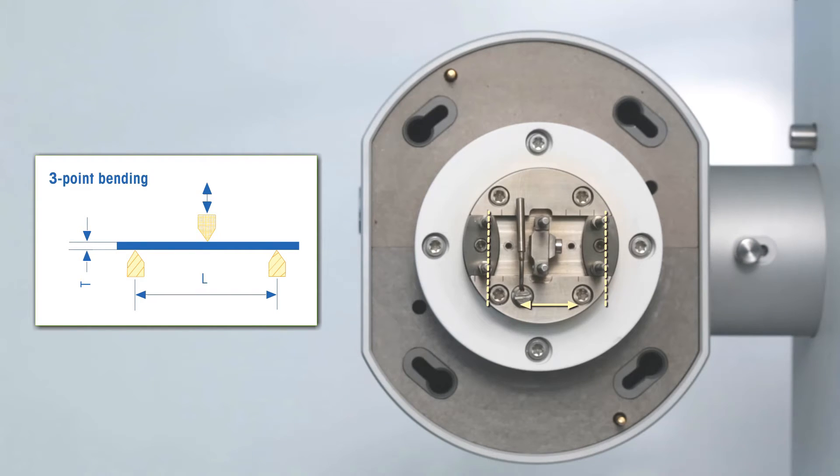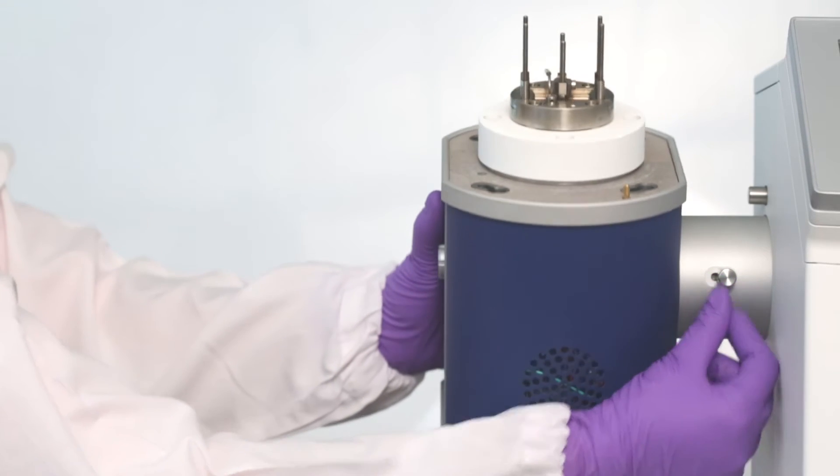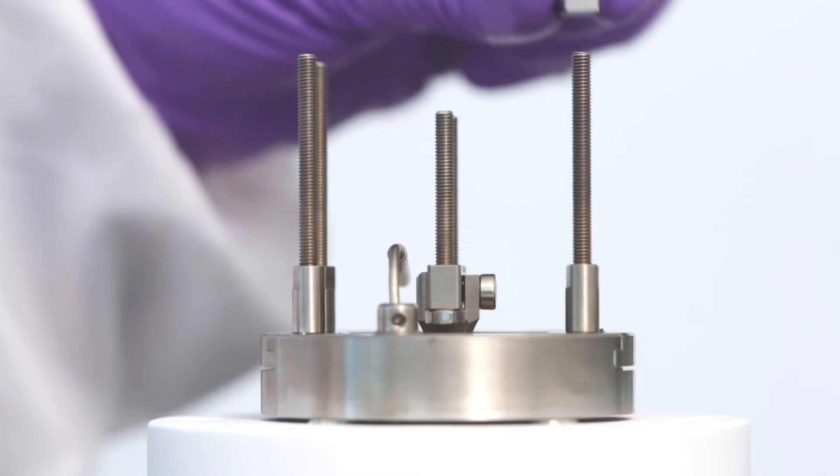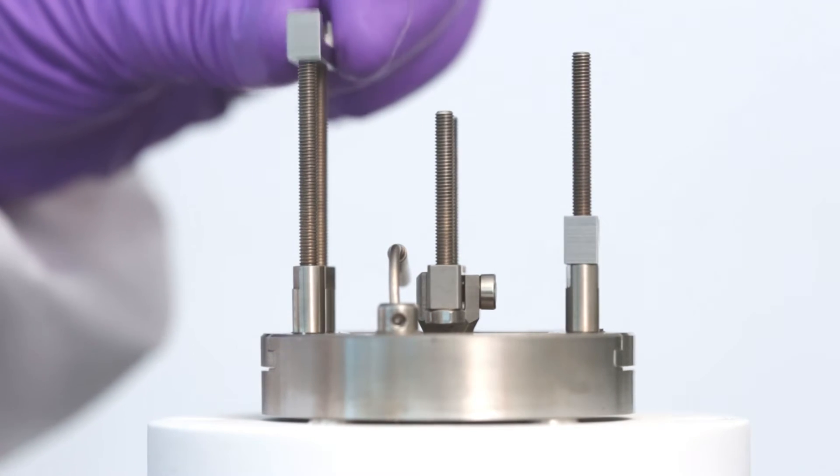The sample holder is set up for 3-point bending mode. Initially, we need to bring the measuring head into vertical position. Then, we need to fix the two outer clamp bars with the V-shaped edge facing upward with screws.